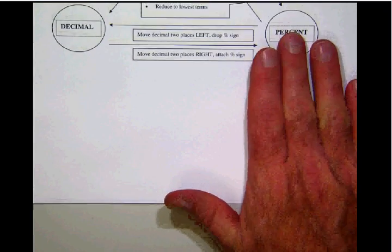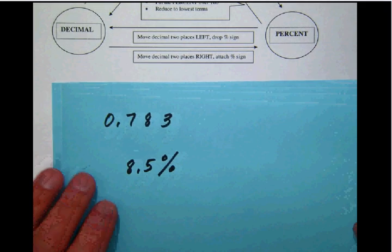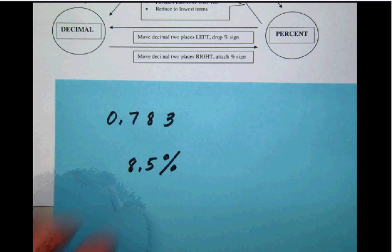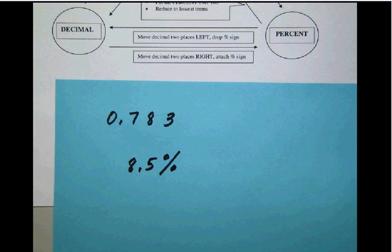So let's keep that note at hand. And then let's go to our problem. Take a quick look at that. And we'll see that the problem that we have is 0.783. We want that to be changed to a percent.